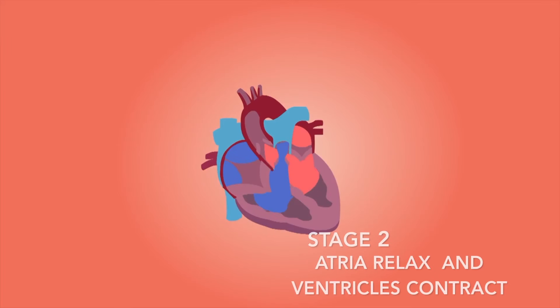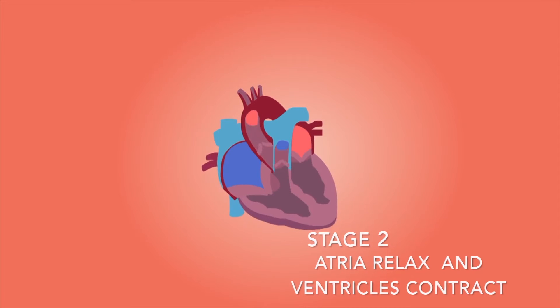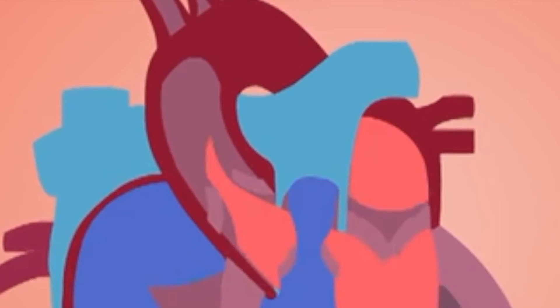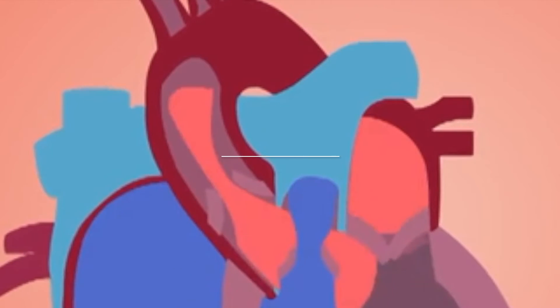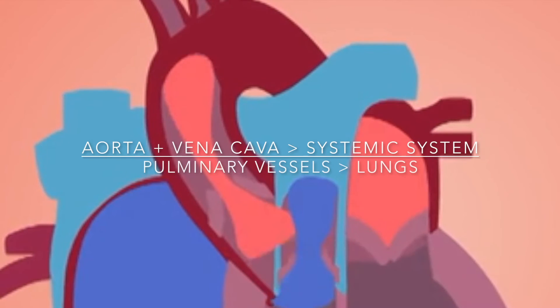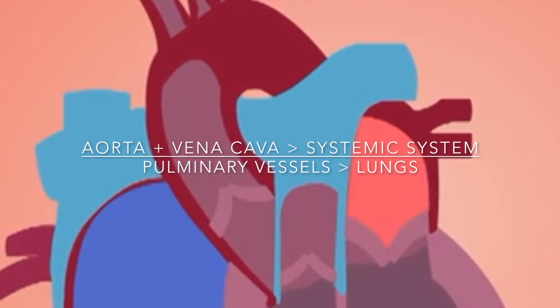Stage 2: Both atria then relax and both ventricles contract simultaneously. This results in higher pressure in the ventricles compared to the atria above. The difference in pressure closes each atrioventricular valve, preventing the backflow of blood into each atrium. Higher pressure in the ventricles compared to the aorta and pulmonary artery opens the semilunar valves, and blood is ejected into these arteries. Blood flows through the systemic circulatory system via the aorta and vena cava, and through the lungs via the pulmonary vessels.